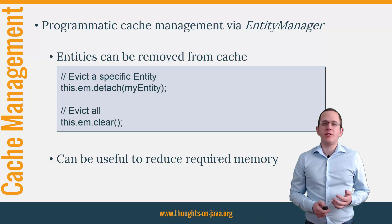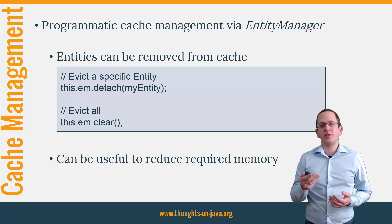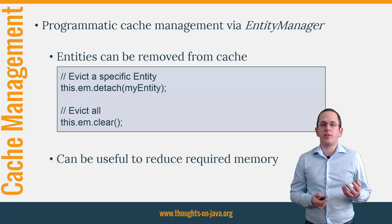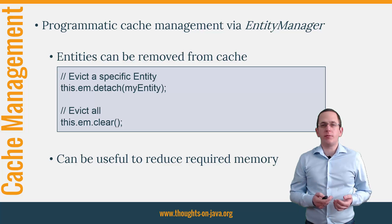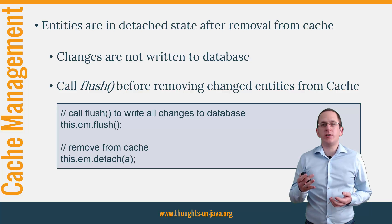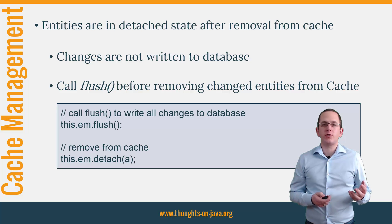In general it is really easy to use the first level cache because you don't have to do anything. But as good as the first level cache is in most regular use cases, it can become an issue in very large transactions like batch imports. Keeping thousands or even hundreds of thousands of entities in the cache requires a lot of memory and management effort, and the first level cache can slow down your application. If that is the case, you need to remove entities from the cache programmatically using the detach and clear methods of the entity manager. Detach removes a specific entity from the cache and clear removes all of them. The entity will be in detached state after removal, so make sure all changes are stored in the database before detaching — this can be done by calling the flush method on the entity manager.